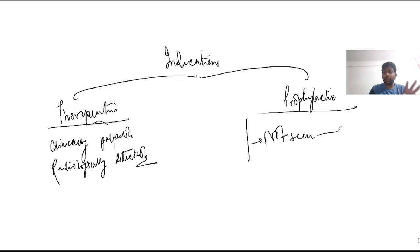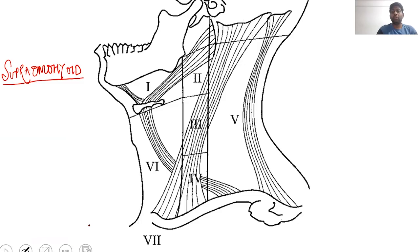So depending on anatomical structures removed, we have one classification, and depending on indications for surgery, we have a different classification. Now let us move into the subtypes of selective neck dissection, which is a very important topic. The first subtype we will discuss is the supraomohyoid neck dissection.